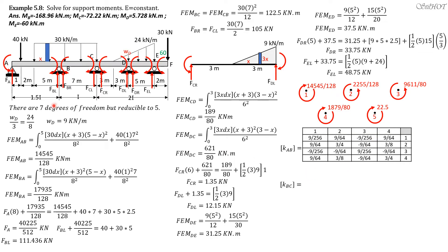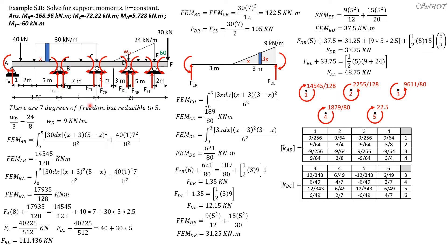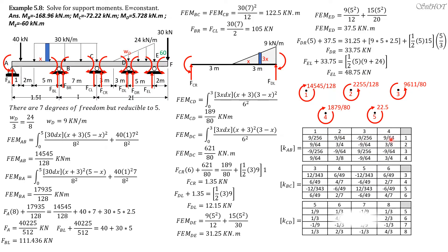For the stiffness of member AB, with EI = 1.5 and length 8: the entry 12EI/L³ gives 9 over 256, and 6EI/L² gives 9 over 64. The diagonal term 4EI/L gives 4 times 1.5 over 8, which is 3 fourths. The off-diagonal term 2EI/L is one half of 3 fourths, giving 3 eighths.